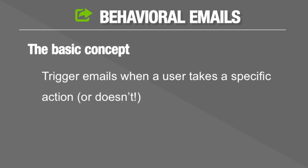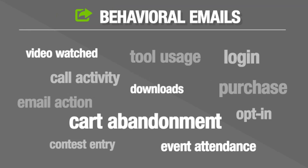First and foremost: behavioral-triggered emails. Individuals take action on specific content — they take action inside of an email you send them, they download things, they perform some sort of behavior — and then they are placed into a behavioral trigger that fires immediately after that specific behavior. Or the reverse is also true: if individuals do not engage with specific content, you can also take action.